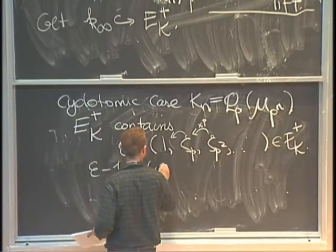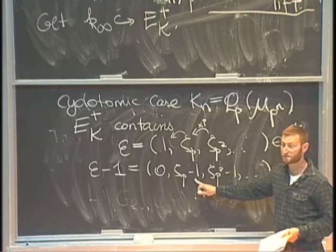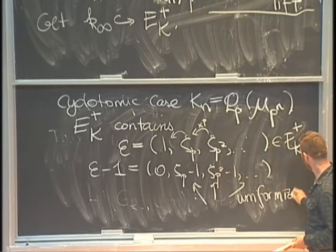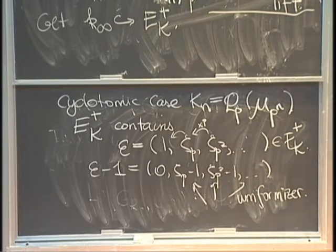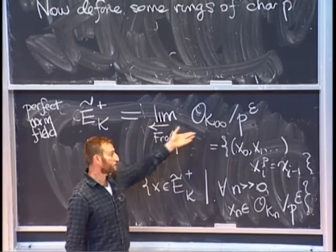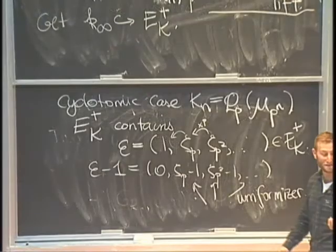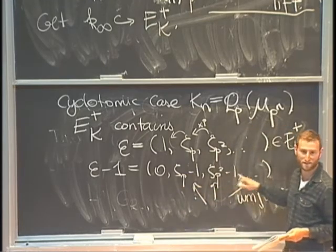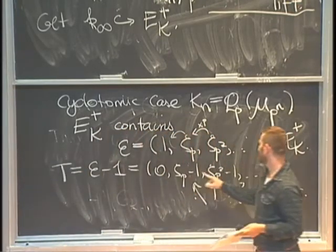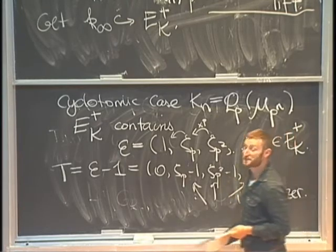ε - 1 gives the sequence (0, ζ_p - 1, ζ_{p²} - 1, …). Each of these elements is a uniformizer in the respective field. Both of these rings are topological rings — E_K^+ is an inverse limit of discrete rings so it has a topology. A sequence goes to zero when you eventually get zeros in the first, second, third position, and so forth. When I take this element T and take powers of it, the (p-1)-th power sends the first component to zero, the p(p-1)-th power sends the second to zero. So this guy is topologically nilpotent.